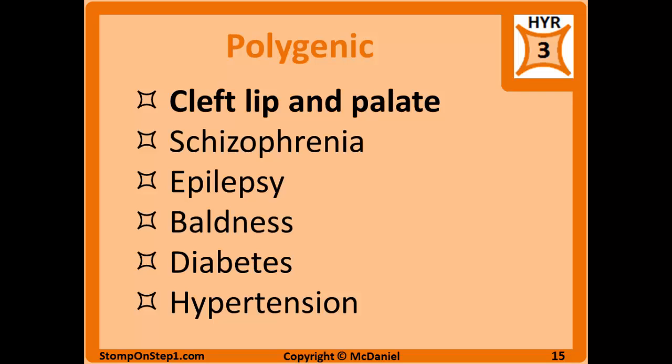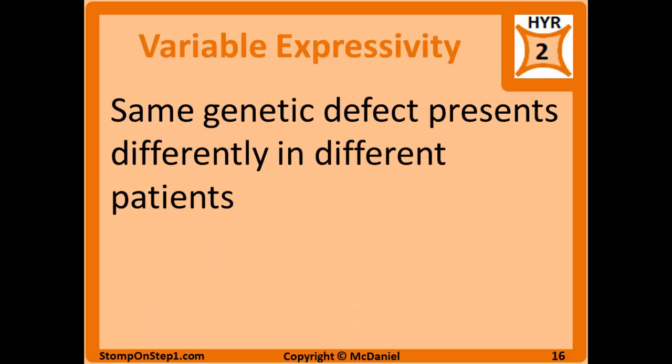Variable expressivity is when the same genetic defect presents differently in different people — with different severities, different organ systems affected, and different signs and symptoms. A good example is neurofibromatosis, which will be covered in a later video in the genetics section. Some people may have more cutaneous problems, others have tumors in different locations — it doesn't present exactly the same in everybody.